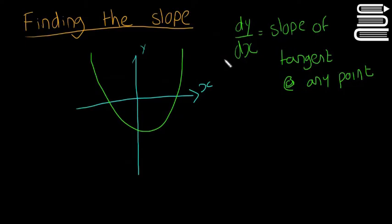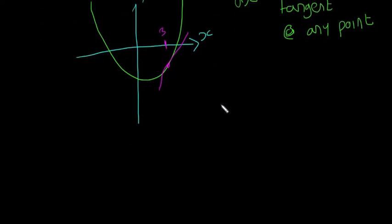Generally they won't want to ask us the slope of the tangent at any point. They'll want to ask us, for example, the slope of the tangent at this point here. So at x equals 3, pretend that's a tangent there. What's the slope of that tangent? That tells us how the curve is changing at that point, which is quite useful.